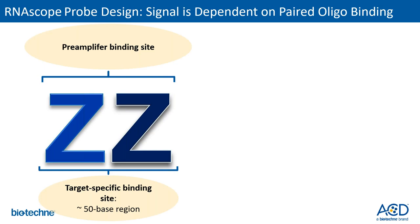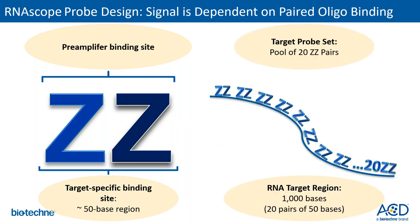Getting into the nuts and bolts of the double Z technology: each member of a double Z pair consists of a target binding region, a linker, and a tail region. When two members of a double Z pair hybridize along a target RNA molecule, a target-specific binding site of about 50 bases is created. The two tail regions are brought together to create a pre-amplifier binding site for subsequent signal amplification. A target probe set consists of a pool of approximately 20 double Z pairs targeting a length of RNA of approximately 1,000 bases.